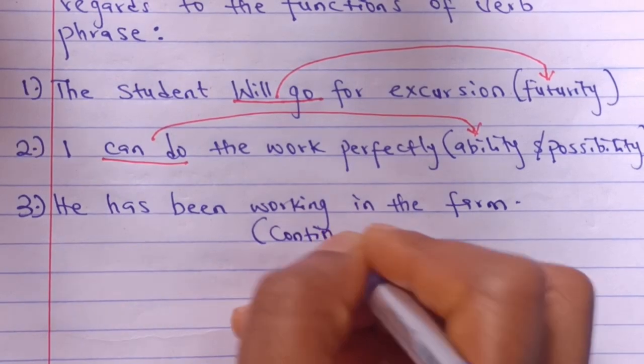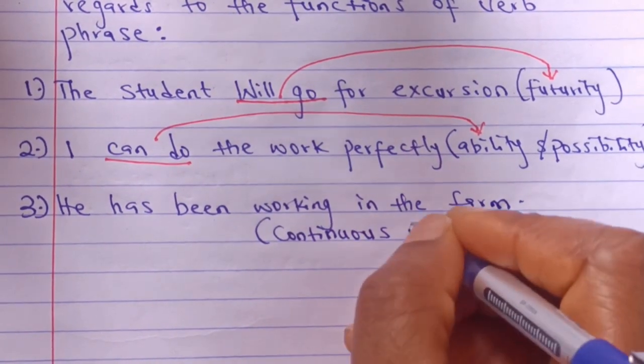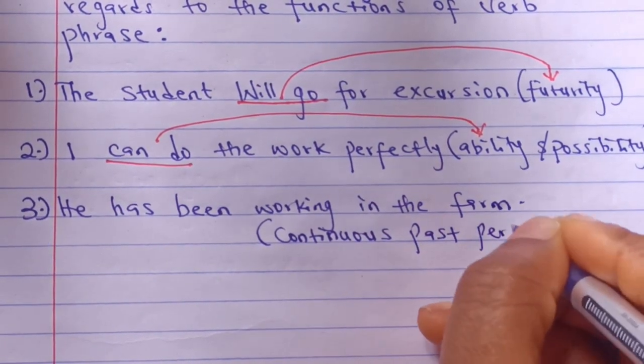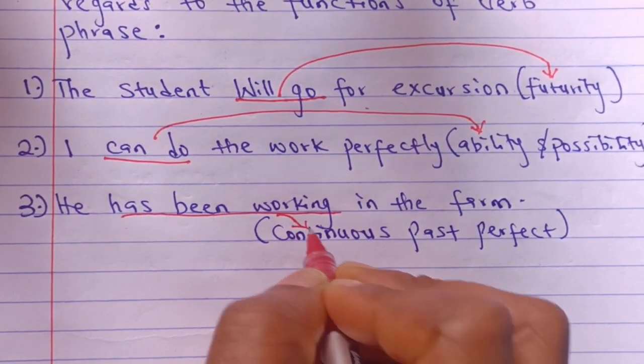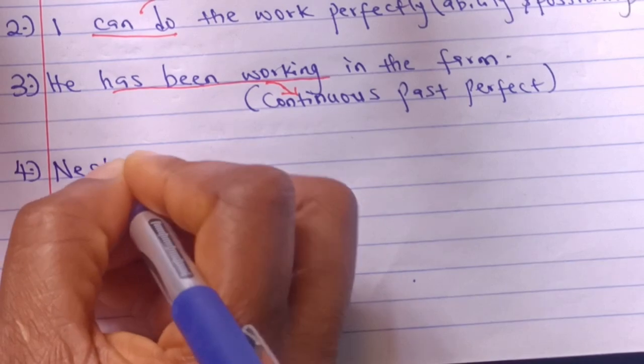Number three: He has been working in the farm. The verb phrase is has been working and it shows continuous past perfect.